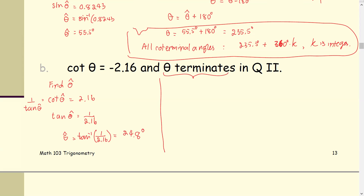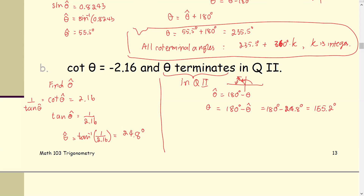Now use theta-hat to find theta. In the second quadrant, the reference angle is defined by 180 degrees minus the original angle theta, that is, the difference between the x-axis and the terminal side. That means theta equals 180 degrees minus the reference angle, which is 180 minus 24.8 degrees, giving us 155.2 degrees as the angle terminating in quadrant 2 where cotangent theta equals negative 2.16.